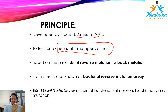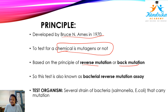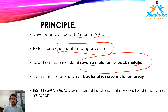The principle of the Ames test is based on reverse mutation, also called back mutation. What is reverse mutation? If one mutation causes damage in your DNA, sometimes in some bacteria a reverse mutation can occur. After one mutation damages the DNA, it can be recovered by a reverse mutation or back mutation. This is the principle — don't think that any mutation can be repaired by reverse mutation in general.